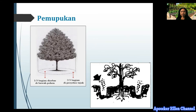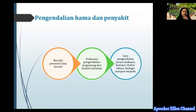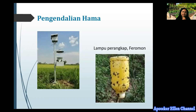Untuk pengendalian hama dan penyakit tanaman, biasanya dilakukan sebagai pencegahan atau kuratif, dan juga pengobatan atau operatif. Frekuensi pengendalian tergantung dari kondisi suatu tanaman. Cara pengendalian secara mekanis, hayati, kultur teknis, biologis, maupun terpadu. Contohnya cara pengendalian hama menggunakan lampu perangkap di sebelah kiri, atau feromon di sebelah kanan.